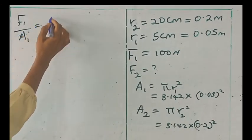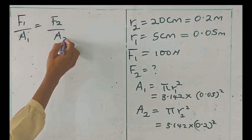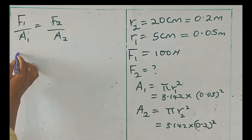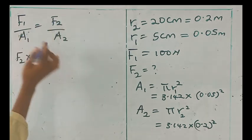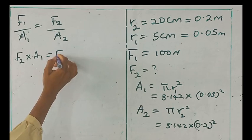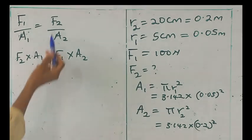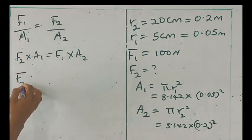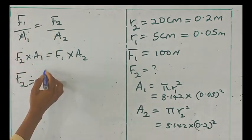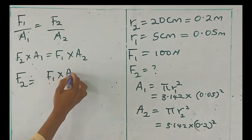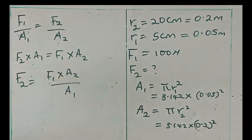F1 over A1 is equal to F2 over A2. If we cross multiply, F2 times A1, is equal to F1 times A2. That's if we cross multiply. Let's make F2 the subject of the formula. F2 will be F1 times A2 over A1.